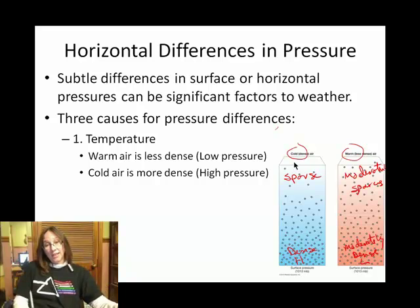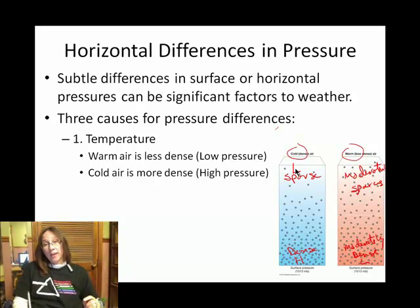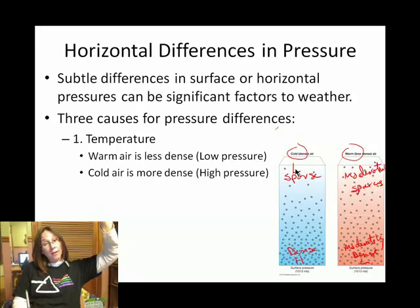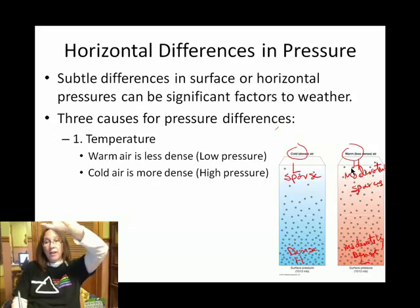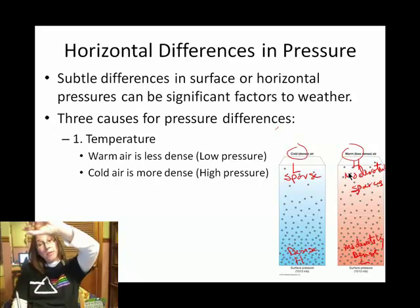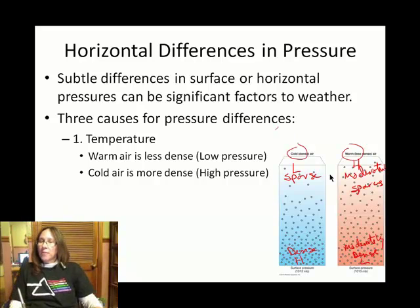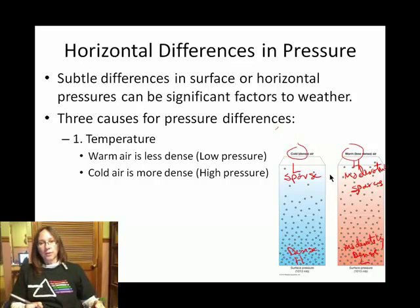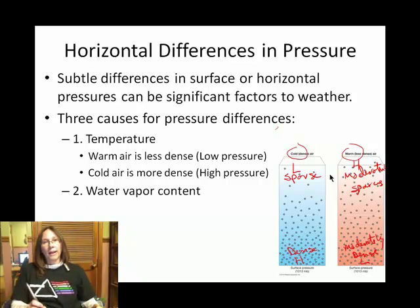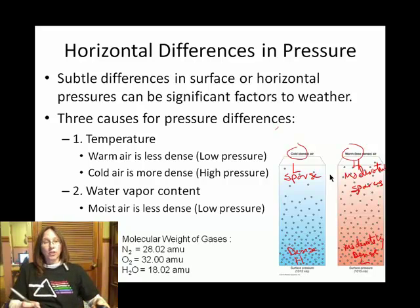But up aloft, we have just the opposite. At higher elevations, we end up with a low pressure at the top of the cold column of air, and relative to that, the top of the warm column has what we call a high pressure. So the temperature of a parcel of air tends to give it a certain pressure — cold air tends to have higher pressure than warm air.